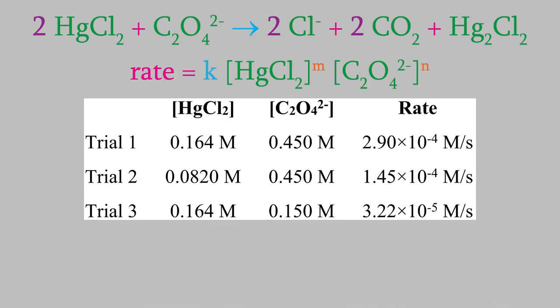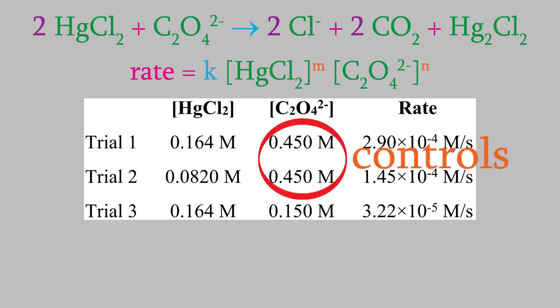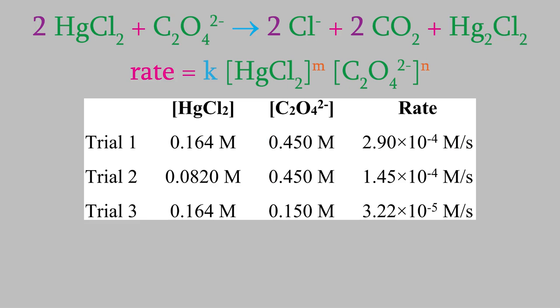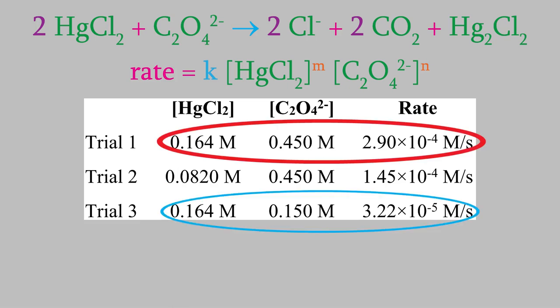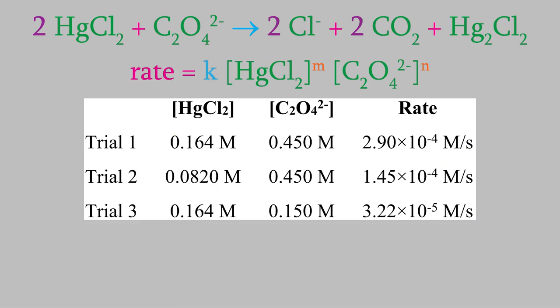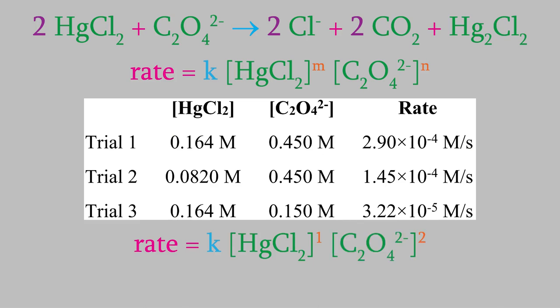So here's some data for this reaction. If we compare the first two trials, you can see that the concentration of mercury chloride changes and the oxalate stays the same, so the oxalate is our control. If we take the ratio of trial 1 to trial 2, we get a ratio of 2 for the rates and a ratio of 2 for the concentrations. That makes the exponent 1 for mercury chloride. To get the exponent for the oxalate, we need to compare two trials where mercury chloride is the control, so we'll compare trials 1 and 3. If we take the ratio of the rates, we get 9, and the ratio of the concentrations is 3. That means our exponent for oxalate will be 2. So that gives us our rate law: we use 1 for the exponent on mercury chloride and 2 for the exponent on oxalate.